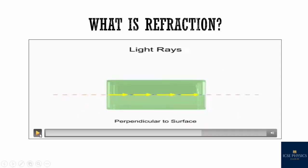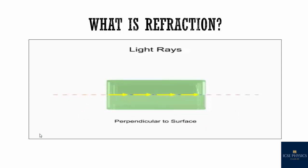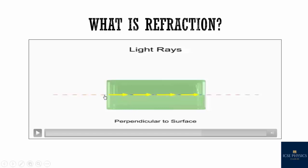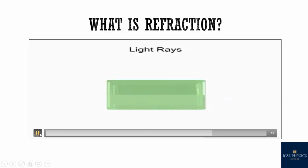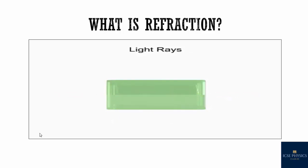If light enters into a medium perpendicular to the surface and enters glass, it passes straight through but at a slow speed. However, if the light beam arrives at a medium surface at an angle, not only will its speed be reduced, but it will bend due to a process called refraction.